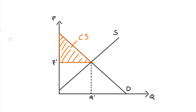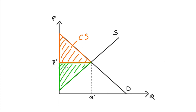Our producer surplus is the welfare afforded to our producers — that's the area above the supply curve, below the price that the suppliers get per unit. That's that green triangle there: our producer surplus.